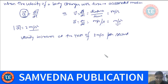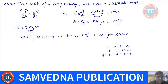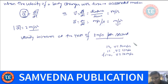So at t = 10 seconds if the velocity is 10 m/s, then at t = 11 seconds velocity is 12 m/s, at t = 12 seconds velocity is 14 m/s. Every second that passes, the velocity increases by 2 meters per second. The acceleration is 2 meters per second per second — it is increasing at the rate of 2 m/s per second.